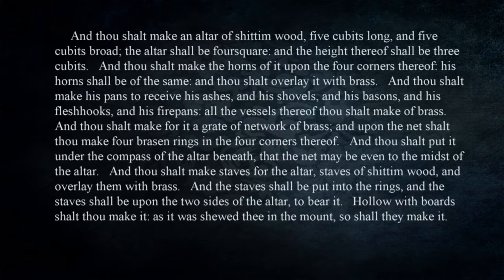God provides detail concerning what the altar should look like: 'And thou shalt make an altar of shittim wood, five cubits long and five cubits broad; the altar shall be foursquare, and the height thereof shall be three cubits. Thou shalt make the horns of it upon the four corners thereof, and thou shalt overlay it with brass. Thou shalt make pans to receive his ashes, shovels, basins, flesh hooks, and fire pans — all the vessels thereof thou shalt make of brass. Thou shalt make for it a grate of network of brass, with four brazen rings in the four corners, to be put under the compass of the altar, that the net may be even to the midst of the altar. Thou shalt make staves for the altar of shittim wood and overlay them with brass — hollow with boards shalt thou make it, as it was showed thee in the mount' (Exodus 27:1–8).